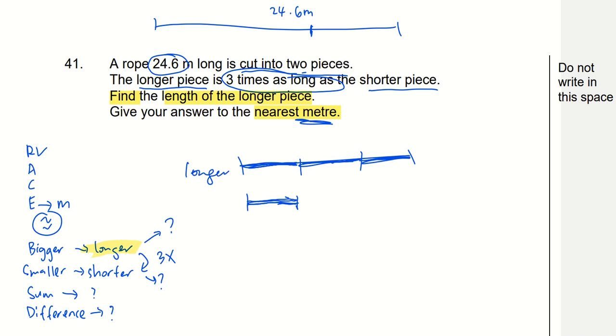The longer piece is three times as long as the shorter piece. So if you look at it, I'm using the unitary method. The whole thing, when you join all these pieces together, longer and the shorter, the two pieces together, it should give you 24.6 meters. In total, I can have four units of the rope, it's 24.6 meters.